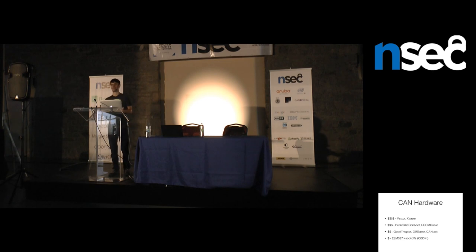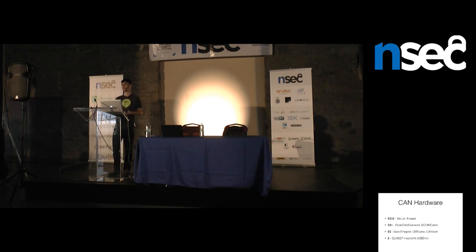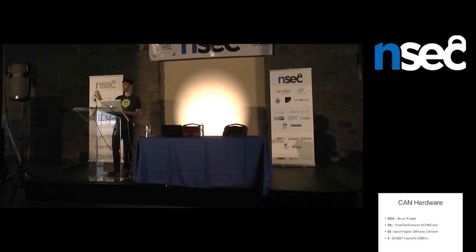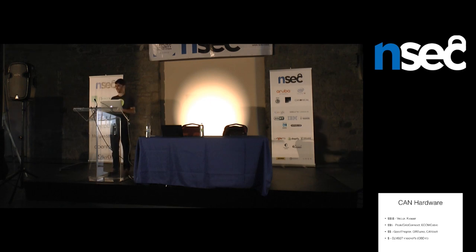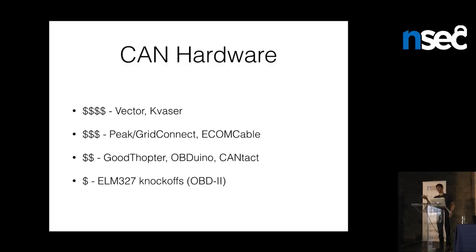If you just want to play with cars and invest zero time or money, there are ELM327 knockoffs. Elm Electronics, a Canadian company, made a really cool chip that does all of the OBD2 protocols. You can find them from China for scary cheap — under $10 from Deal Extreme — though there are also well-reviewed ones on Amazon. For $10 or $20, you can get something you can plug into a car that can actually save you money: clear fault codes, read fault codes, that sort of thing.